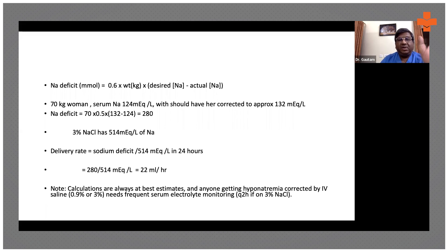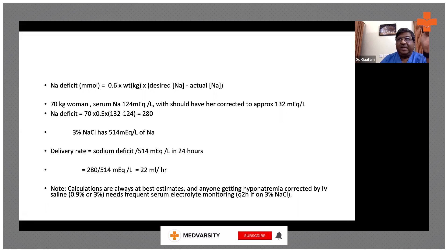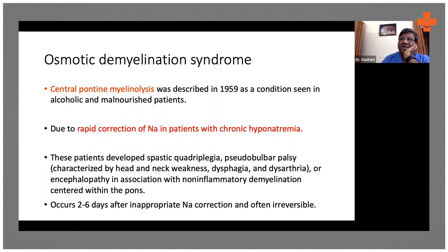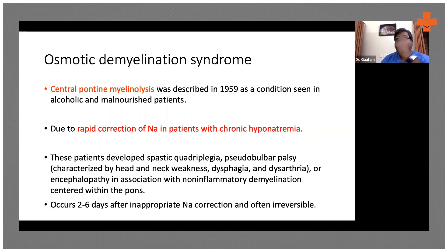Formulae are available to help decide how much 3% saline to give and at what rate, though most of the time they are not needed. We decide whether it is an acute drop or chronic hyponatremia and start accordingly — approximately 10 to 15 ml per hour of 3% saline — and measure sodium every six to eight hours.